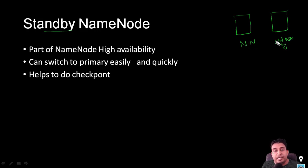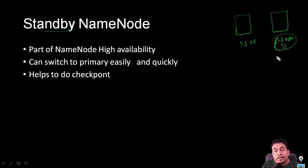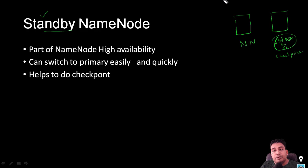An additional feature that standby name node provides is that it also helps to do the checkpoint. So standby name node gives you high availability plus checkpoint functionality. In contrast, secondary name node only helps to do the checkpoint — it does not provide high availability.